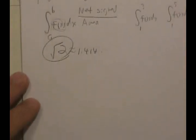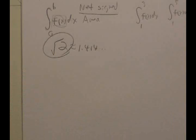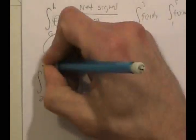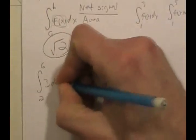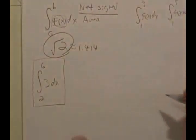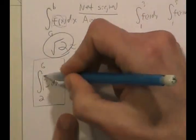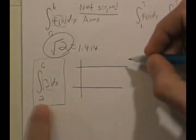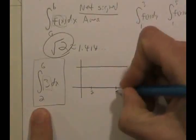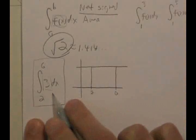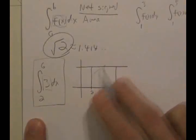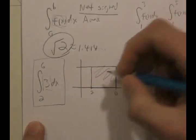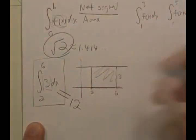I do have a couple of examples where we can find the value exactly. If I write the integral from 2 to 6 of just 3 DX, you're supposed to understand this as the area underneath the function F of X equals 3 — a constant — from X is 2 to X is 6. This definite integral refers to the area of a rectangle of length 4 and height 3, so the actual value of this is 12.